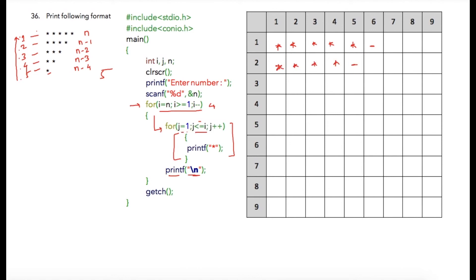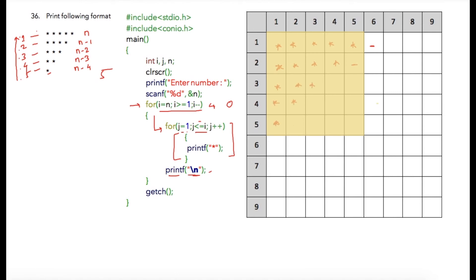The cursor comes to the next line again because of the newline character. This whole process will repeat until i becomes zero and the program terminates. The final output will look like the pattern shown, and in the end the cursor will be at the last position.